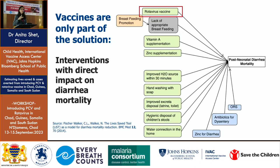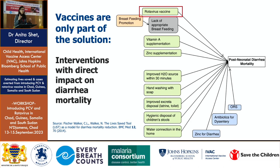Vaccines are only part of the solution. To put it in perspective using post-neonatal diarrhea mortality as an example: the green boxes are prevention interventions, the blue boxes are treatment interventions. Rotavirus vaccine is just one aspect of many things that can be done, including vitamin A, zinc, clean water, and WASH facilities. All of those things contribute towards reducing diarrhea mortality — but vaccines are critical because they are very specific and something we're all working towards.